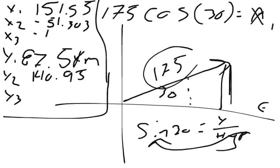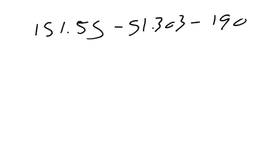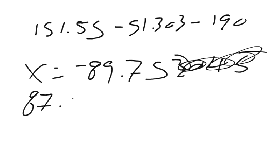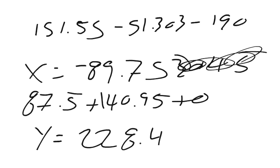So my x3, negative 190. So I want to add up all my x's and all my y's, so y3 is 0, and that will give me my resultant, my resultant x and my resultant y. So when I add all of them up, I get, for my x's, I get 151.55 minus 51.303 minus 190. And that equals x equals negative 89.75. And then for y, y's are 87.5 plus 140.95 plus 0.